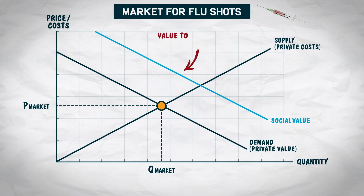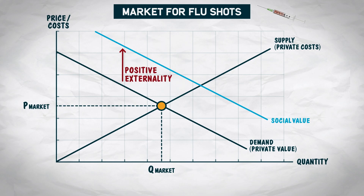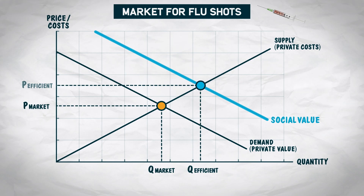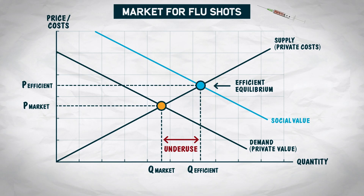This curve represents the value to consumers and to the bystanders of the flu shot. The vertical difference in height between the demand curve and the social benefit curve is the external benefit or positive externality. Social surplus is maximized where the social value curve intersects the supply curve. The socially efficient quantity is greater than the equilibrium quantity — that is the sense in which the market undersupplies goods with positive externalities.